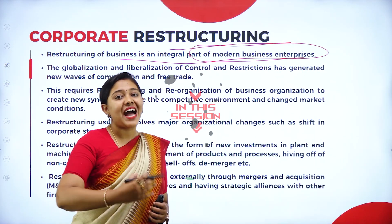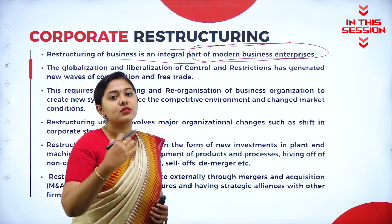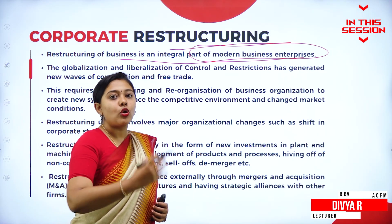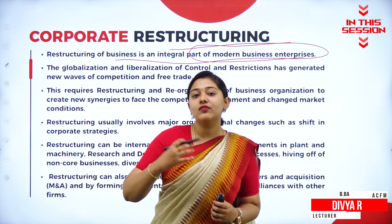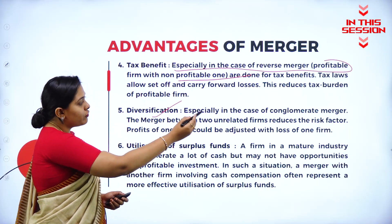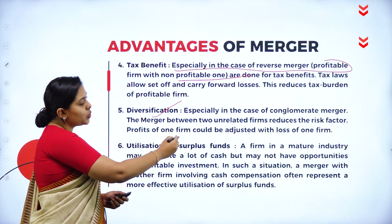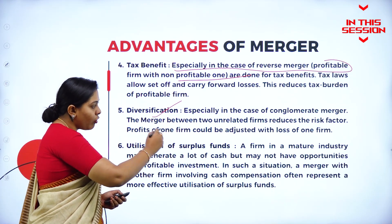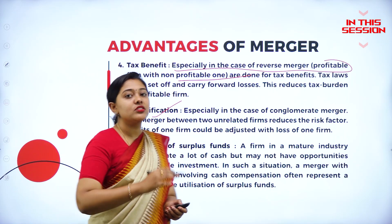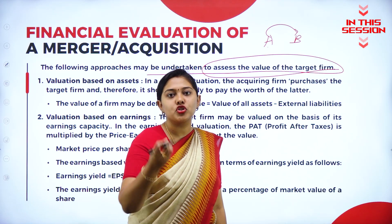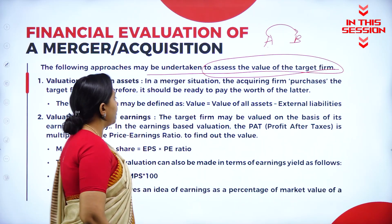There are a lot of opportunities as well as a lot of disadvantages that will come to the front. So in order to face those things, one of the strategies is corporate restructuring. In the case of a conglomerate merger, the merger between two unrelated firms happens. The profit of one firm can be adjusted to the loss of the other firm. Companies need to do financial evaluation, and the following approaches are covered.